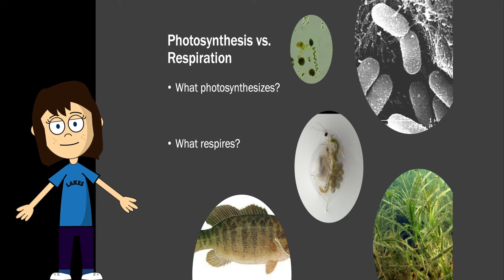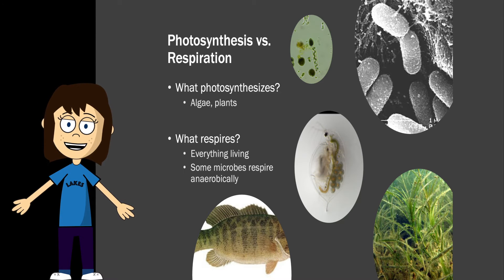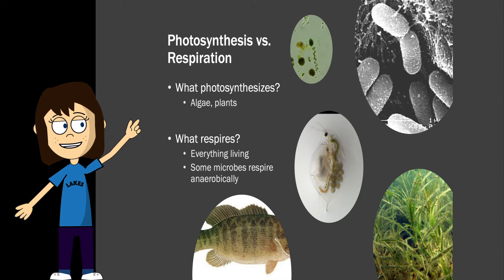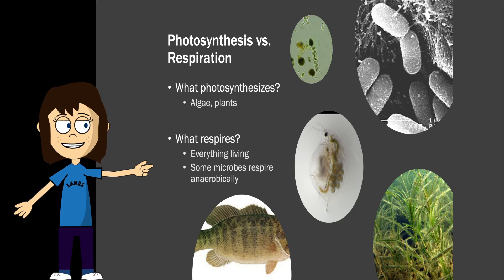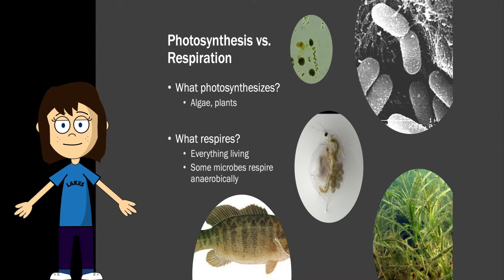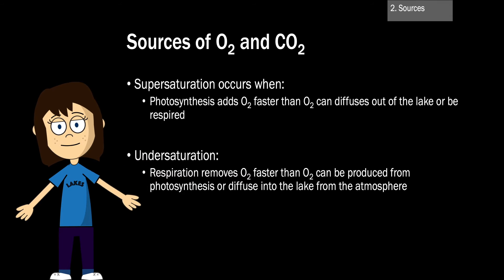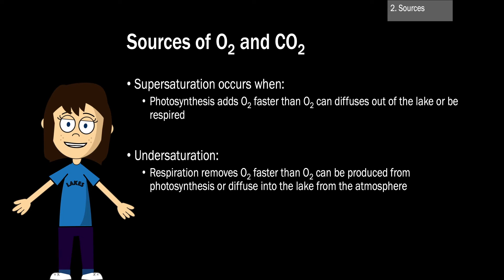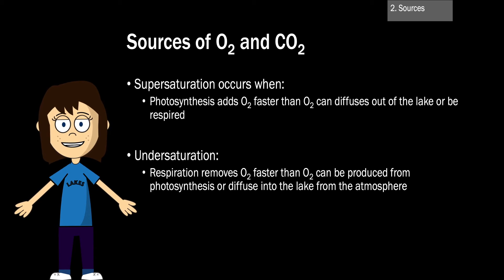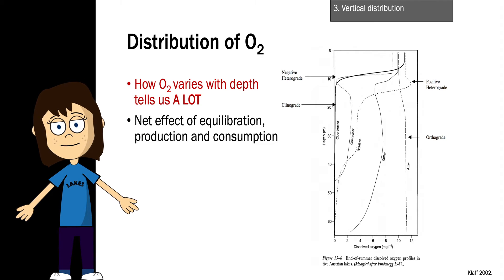Thinking about a lake ecosystem: what's photosynthesizing and what's respiring? Photosynthesizers are algae and plants — these are the oxygen producers in lakes. While photosynthesis is restricted to just a few organisms, almost all living cells respire, with the only exception being some microbes which respire anaerobically. Oxygen supersaturation can occur when photosynthesis adds oxygen faster than it can diffuse out of the lake or be respired. Lakes are undersaturated when respiration removes oxygen faster than photosynthesis or diffusion can replenish it. The distribution and variability of oxygen can tell us a lot about the biology.